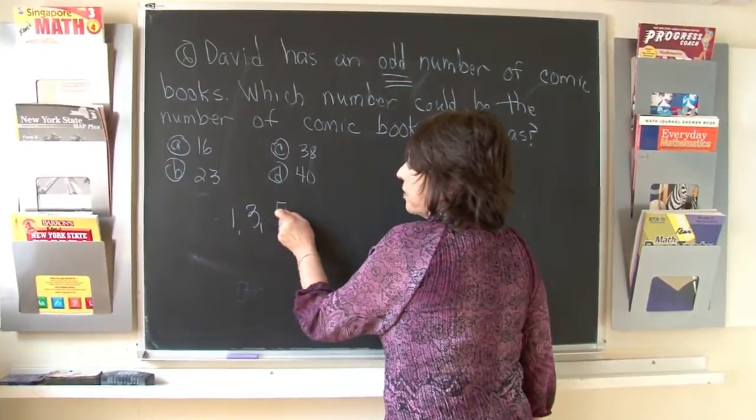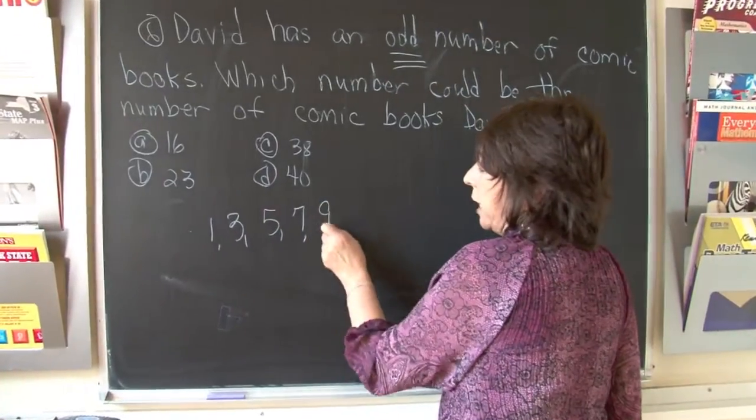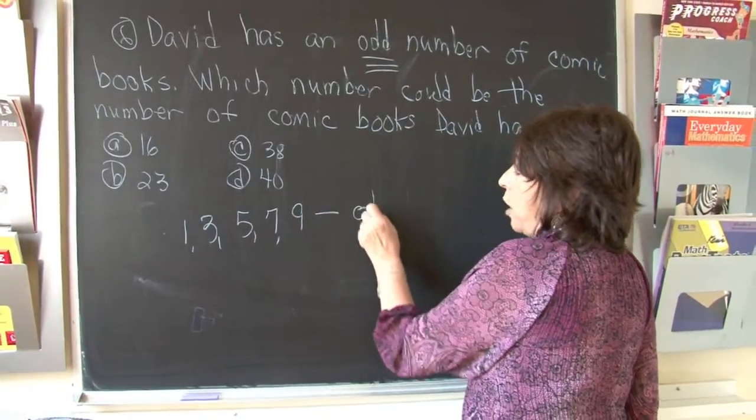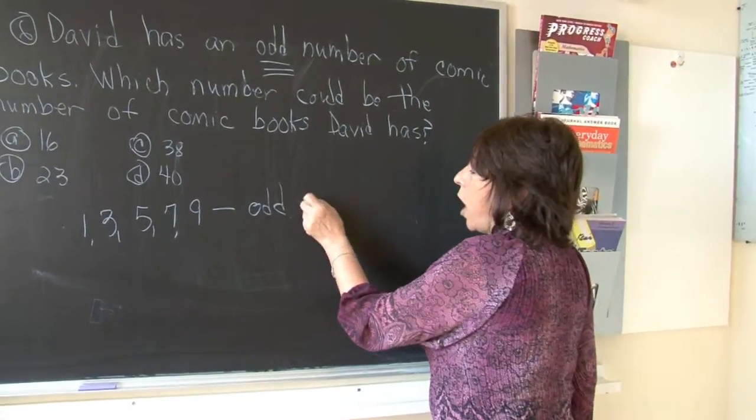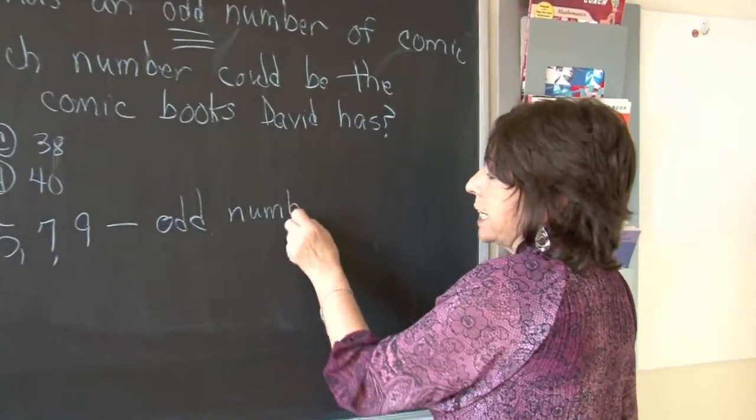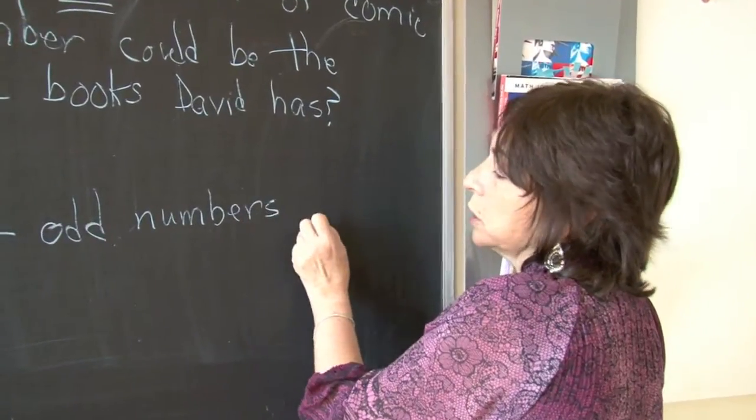One, three, five, seven, nine. Odd numbers are mighty fine. One, three, five, seven, nine. Odd numbers are mighty fine. Let's try that one more time.